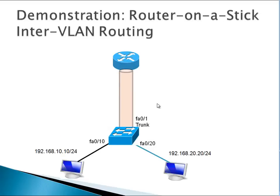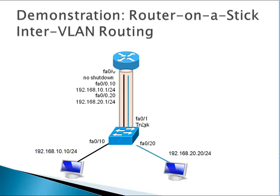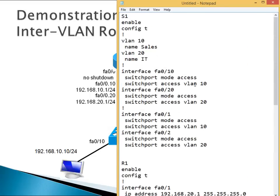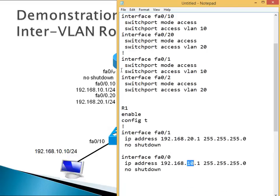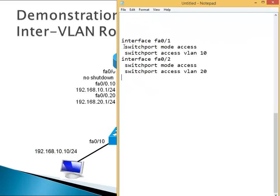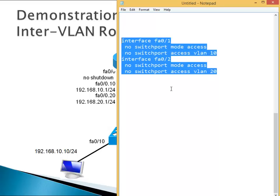Now we're going to configure the VLANs. One problem I see with most students is they forget to make this port a trunk port - it has to be a trunk port. So first we'll configure that. I'm going to remove some of the old configuration - interface fa0/1, no switchport mode access, no switchport access vlan 2 - just clearing up from the previous exercise.